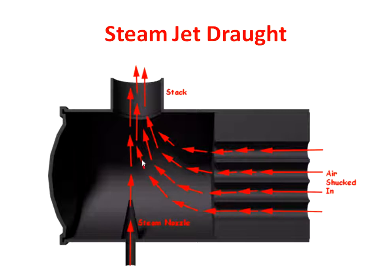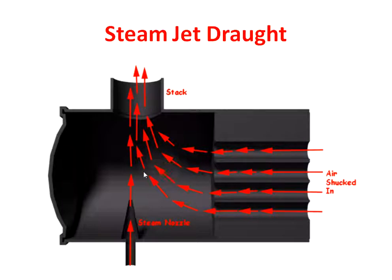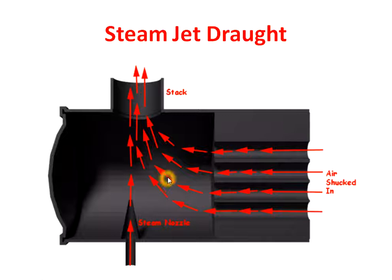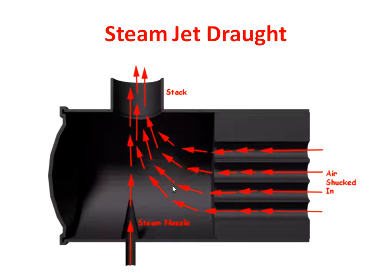So what happens when steam is spread in this section — due to steam pressure, this gas goes out into the atmosphere through this stack. And when this gas goes out through the stack, some negative pressure is generated in this chamber. Through this negative pressure, fresh atmospheric air is sucked inside this chamber.